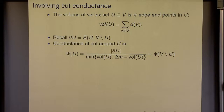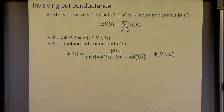To get this result, I'll work with cut conductance. The volume of a set of vertices is the number of edge endpoints in the set. The boundary notation denotes the edges leaving the set. The conductance of a cut — in the case where the set has at most half the vertices — is the number of edges leaving it divided by the number of endpoints in it. We take the symmetric version, so conductance is the same as for the complement.